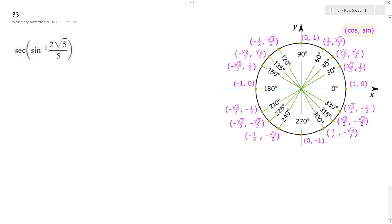So inverse sine is bounded between negative pi over 2 and pi over 2. And 2 root 5 over 5 is in quadrant 1, so that means it's going to be 2 root 5.